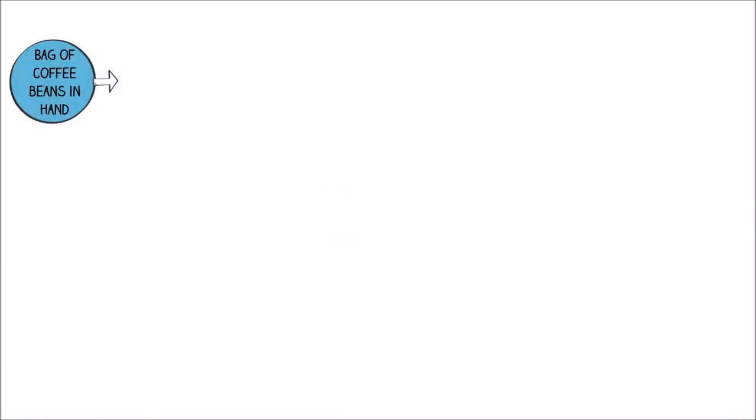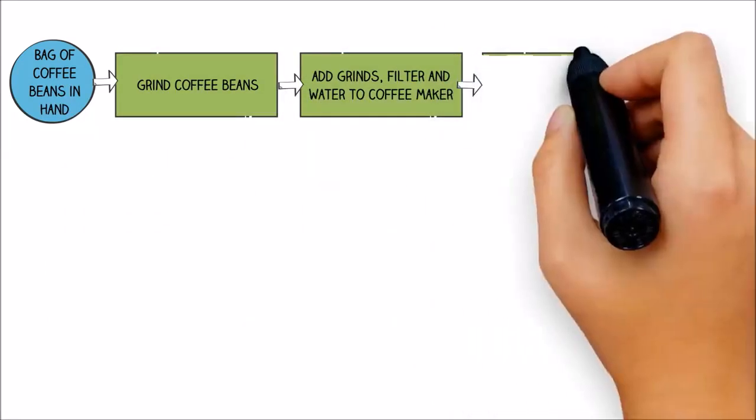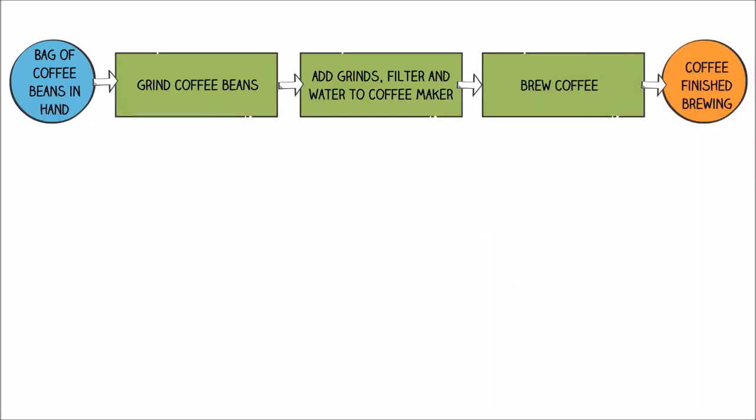So, using our example, the steps include grinding the coffee beans, placing the ground coffee filter and water in the coffee maker, and then brewing the coffee.